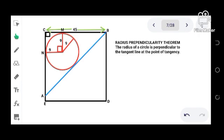The radius perpendicularity theorem states that the radius of a circle is perpendicular to the tangent line at the point of tangency. That means these two here are perpendicular. Since they are perpendicular, then the figure here is a square and the sides therefore are equal.